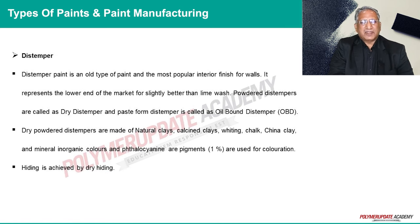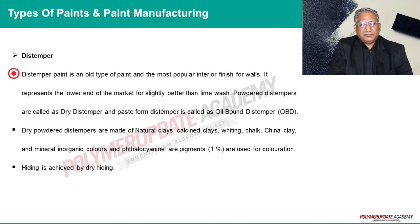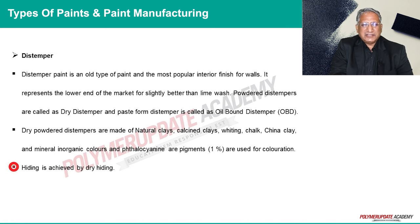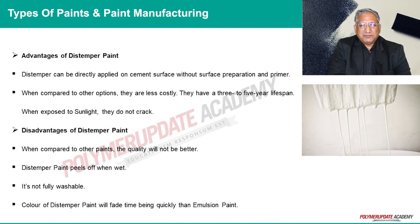Distemper paint is an old type of paint and is the most popular interior finish for walls, representing the lower end of the market — slightly better than lime wash. Powder distemper is called dry distemper, and paste-form distemper is called oil-bound distemper (OBD). Dry powder distemper is made of natural clays, calcined clays, whiting chalk, china clay, and mineral inorganic colors. For coloration, 1% phthalocyanin blue is used. Hiding is achieved by dry hiding in the case of distemper.